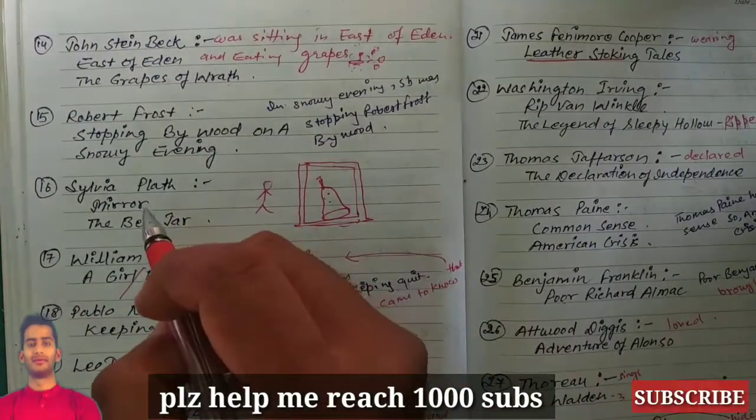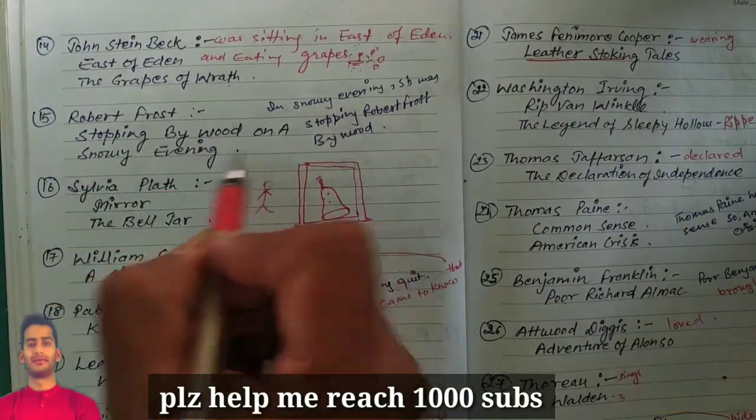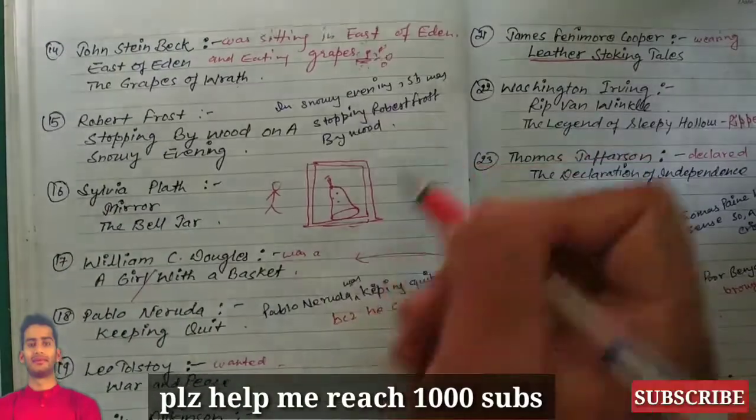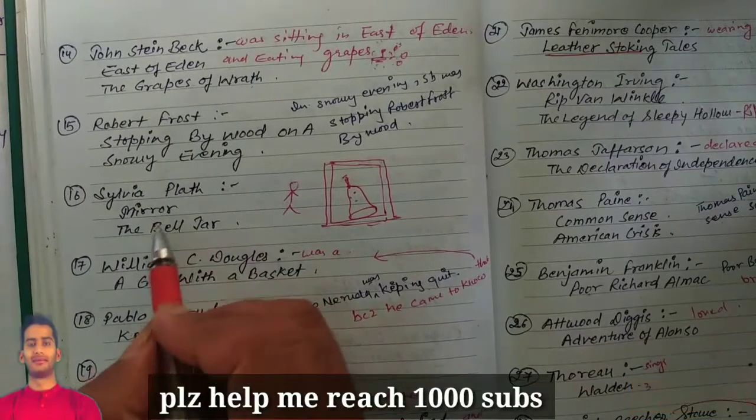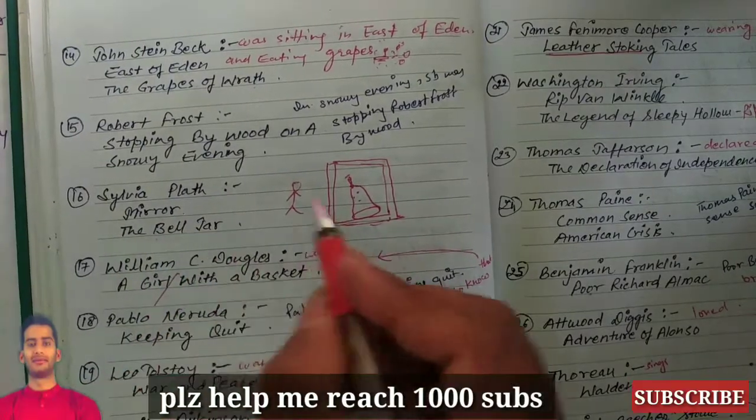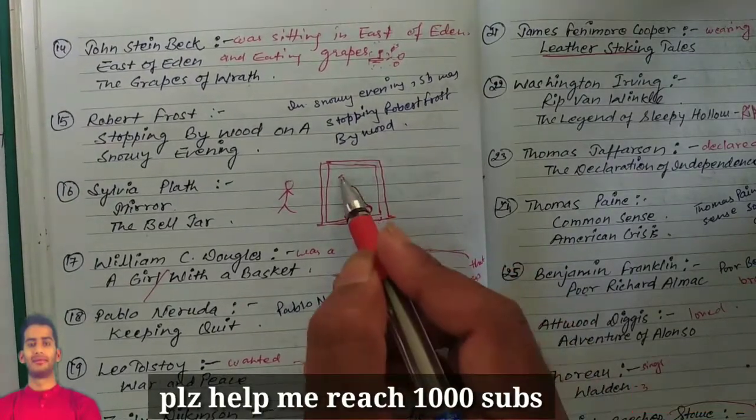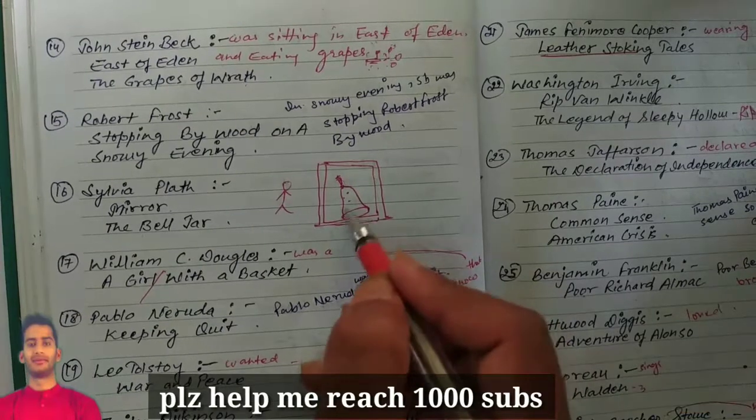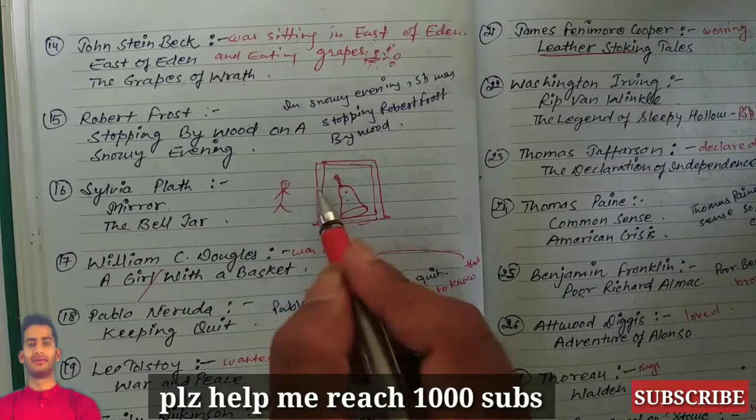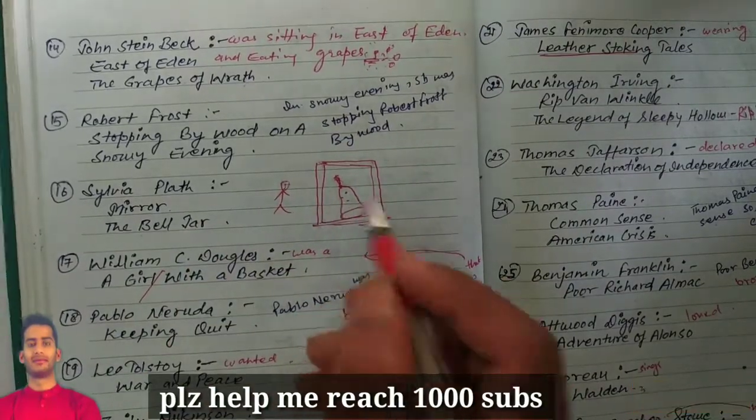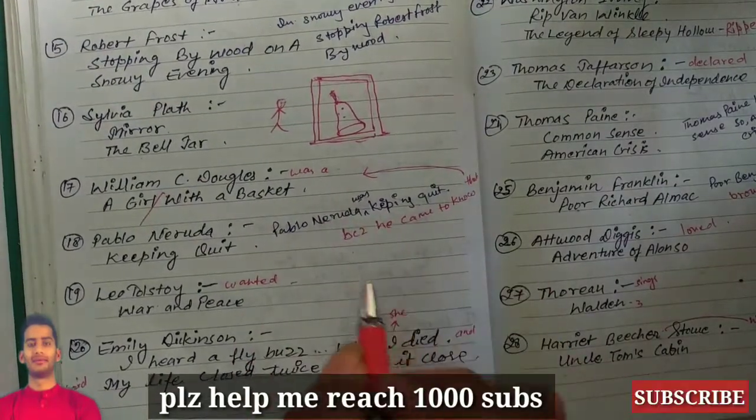Now Robert Frost is Stopping by Woods on a Snowy Evening, so this is quite simple to remember. Everybody knows this work. Sylvia Plath: Mirror and The Bell Jar. So Sylvia Plath had a mirror and in the mirror she had Bell Jar as you can see here. You'll just picturize these things. If you can picturize them well, you will never forget them.